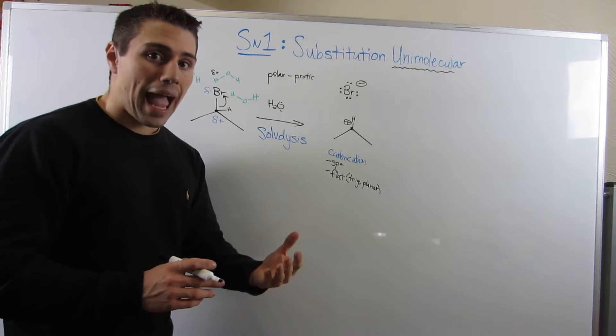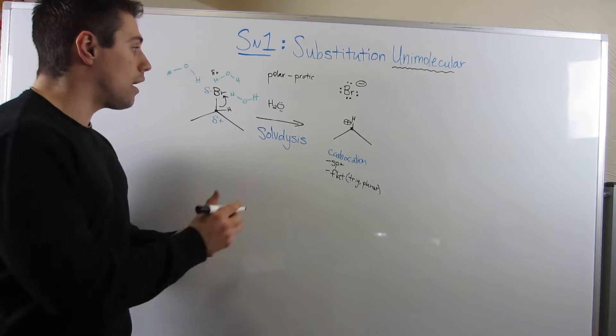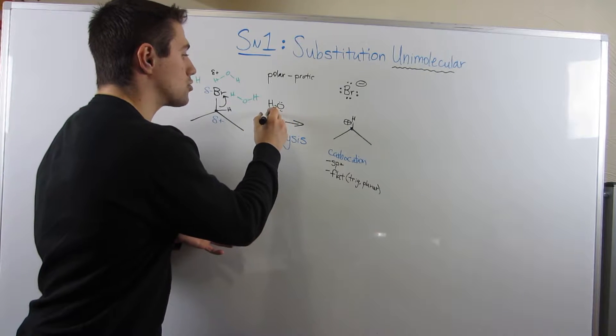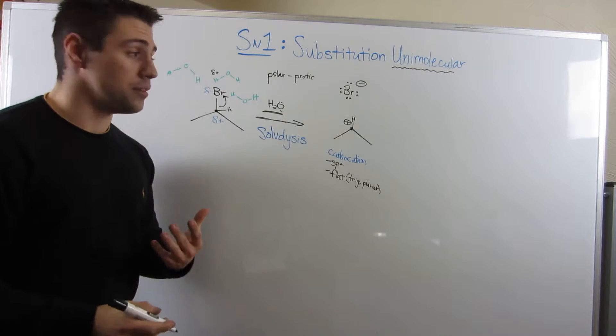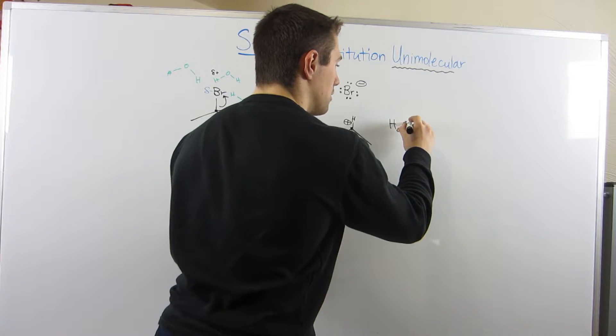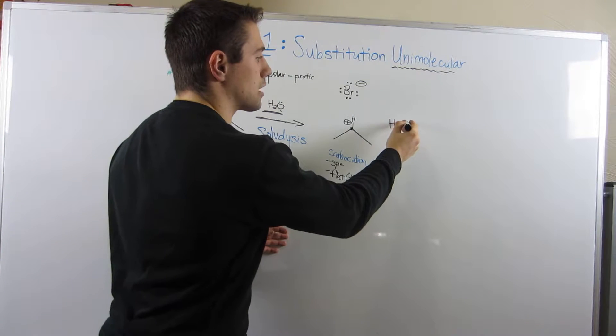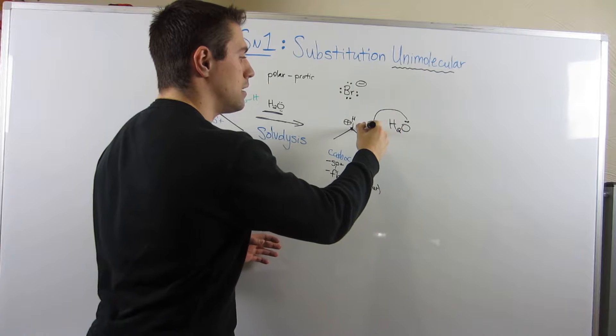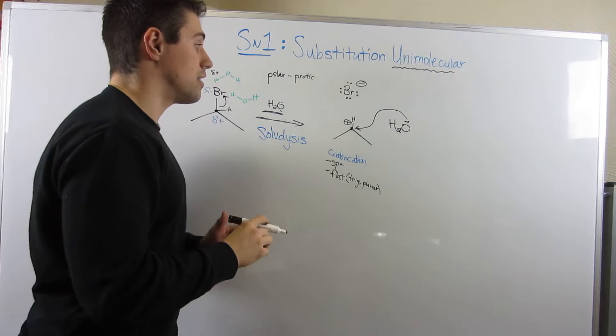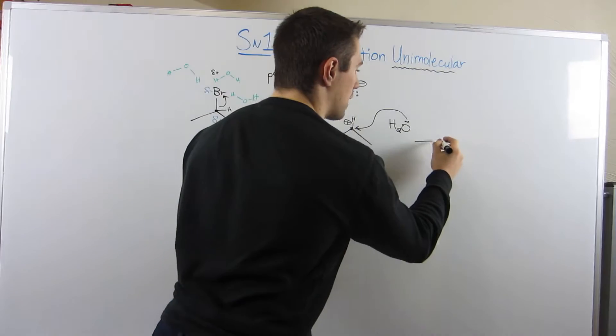We need something to attack. And what's the most abundant nucleophile we have around? Well, it's actually our solvent, it's actually water. So here's what happens. You have water laying around, because there's a ton of it. And what he's going to do is he's going to take his two electrons, and he's going to come in and attack this carbon right there.